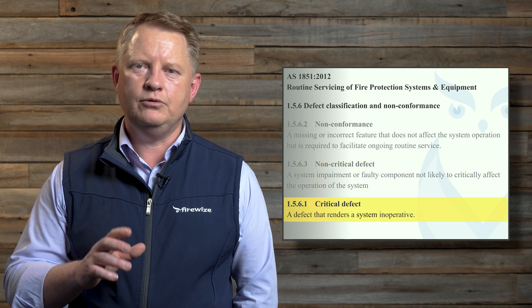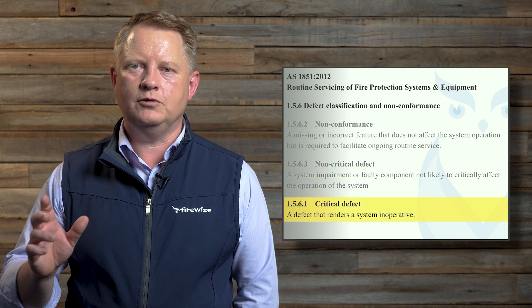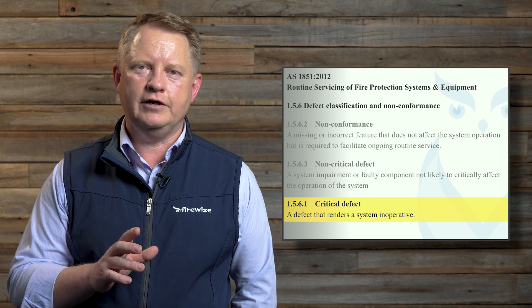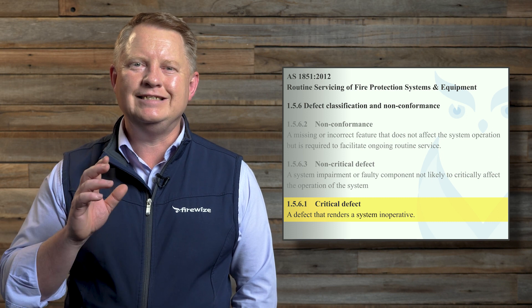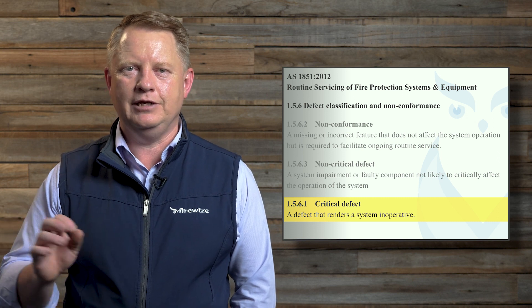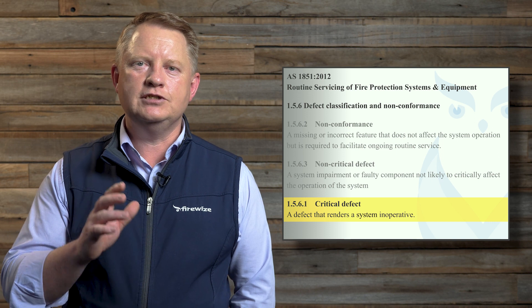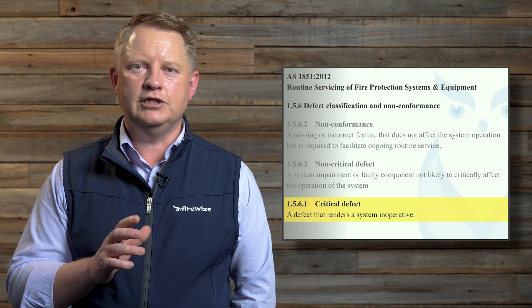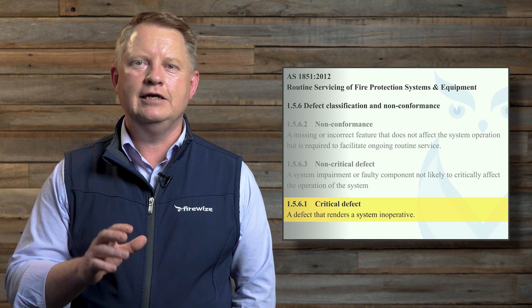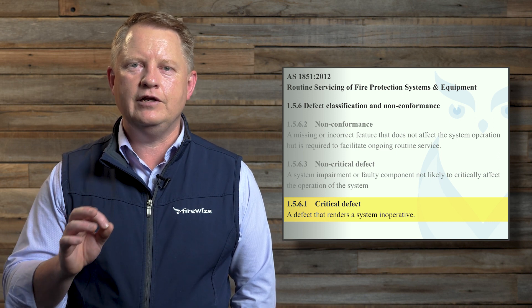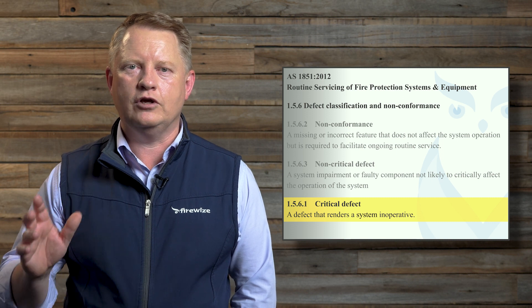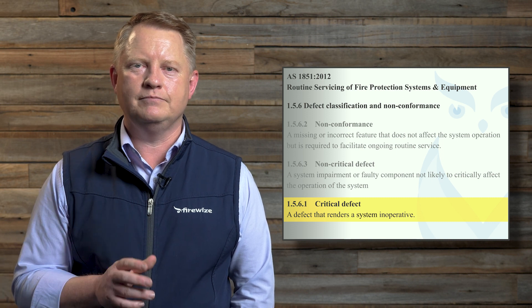And lastly, Clause 1.5.6.1 defines a critical defect as a defect that renders a system inoperative. A critical defect is reasonably likely to have a significant impact on the safety of the occupants of the building. There are examples of these defects in the standard and we'll go through a few with some pictures later in this video.